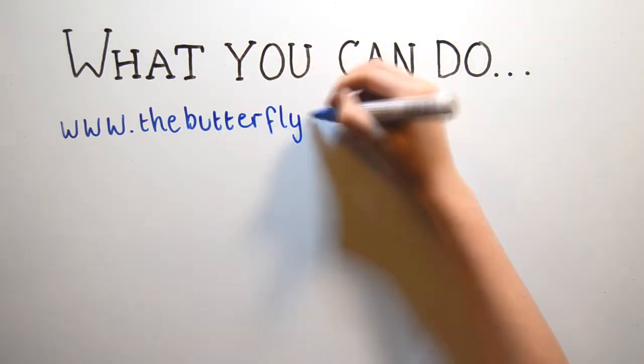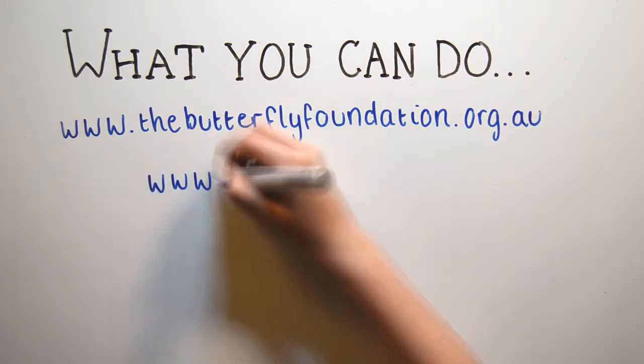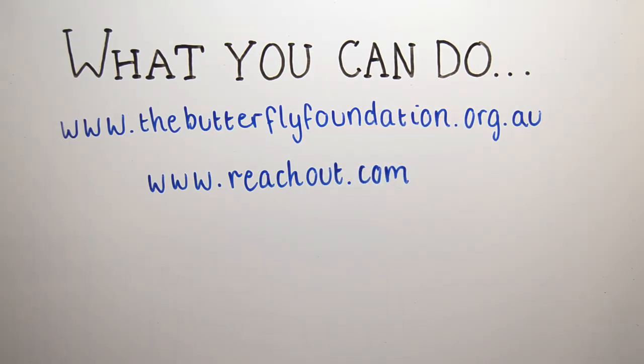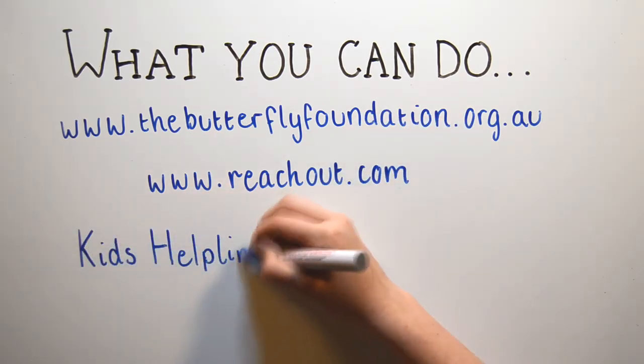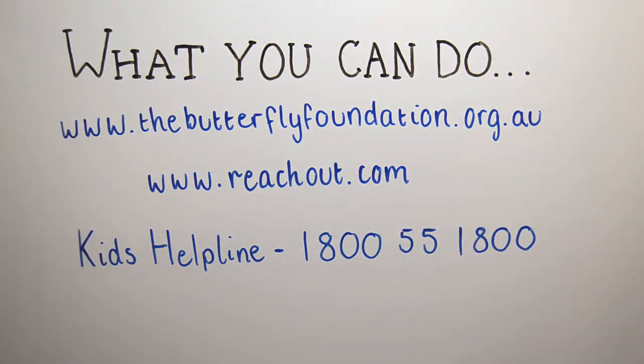For more information, check out thebutterflyfoundation.org.au or visit reachout.com. If you want to talk to someone for information or support, you can call Kids Helpline on 1800 555 1800. And remember, if it's an emergency, call 000.